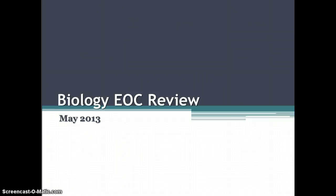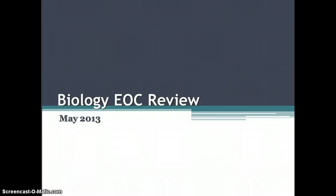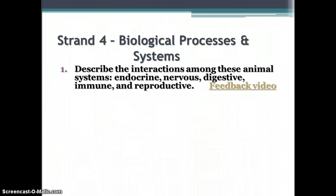This is part three of your biology EOC review. This covers strands four and five. Strand four is about biological processes and systems, and the first question is: